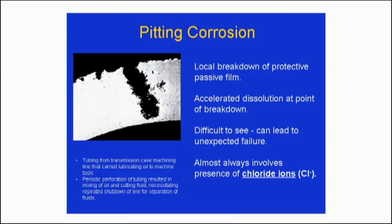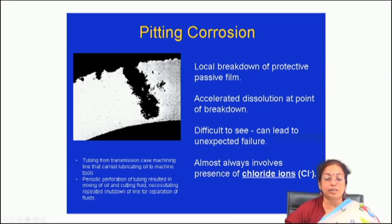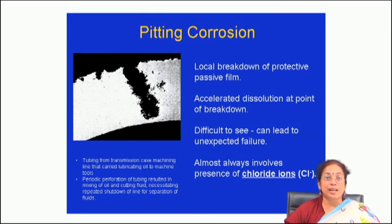If you talk about pitting corrosion, this is also a kind of localized form of corrosion which looks like pits on the surface. After this corrosion you will find that there is pit formation on the surface, and the driving force for pitting corrosion is nothing but local breakdown of the protective passive film and subsequently galvanic cell formation between the exposed surface and the protective surface, and then attack of the non-protective part.